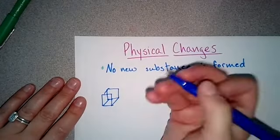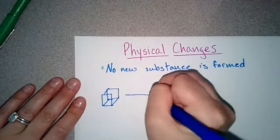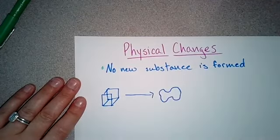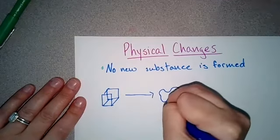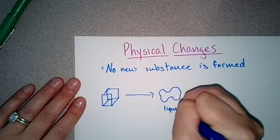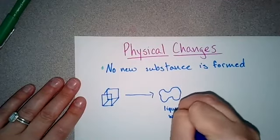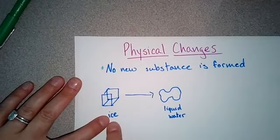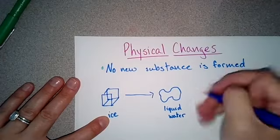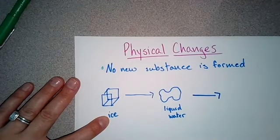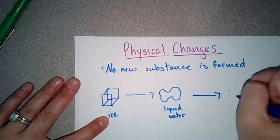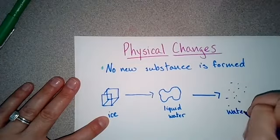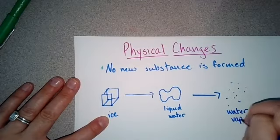All right, when ice is heated, it then turns into water. So this is liquid water. And then when it is further heated, that ice turns into liquid water. Then as it is heated more, it turns into water vapor. Does that make sense?